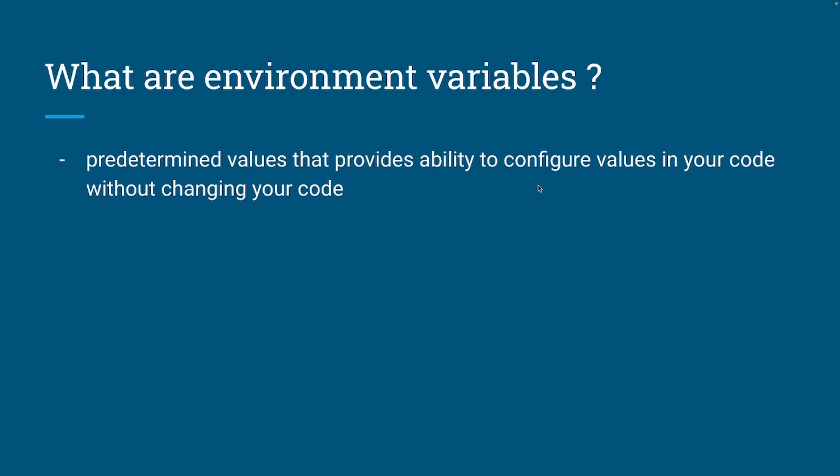So what are environment variables? They are nothing but predetermined values that let you configure some portion of your code without having to change it. One of the simplest examples would be that you can connect to multiple different databases with the same code without having to change anything in your code. That would be one of the most common use cases of environment variables.